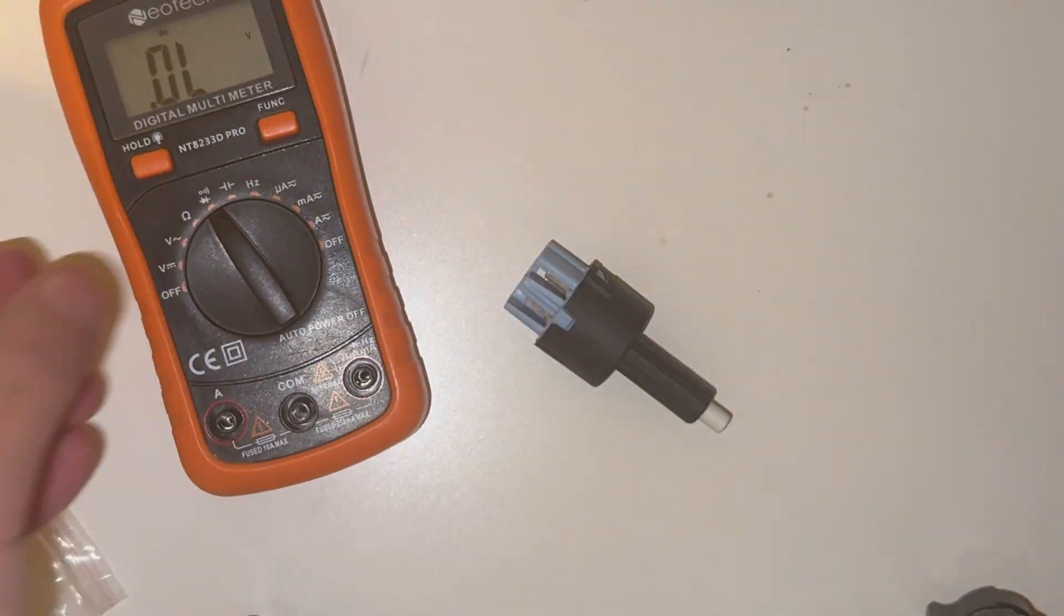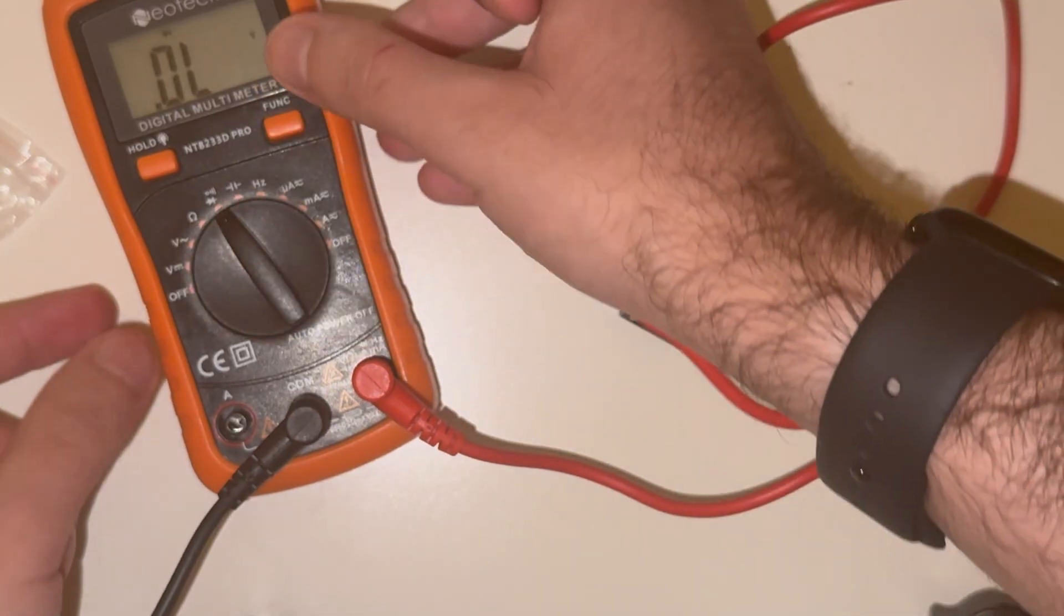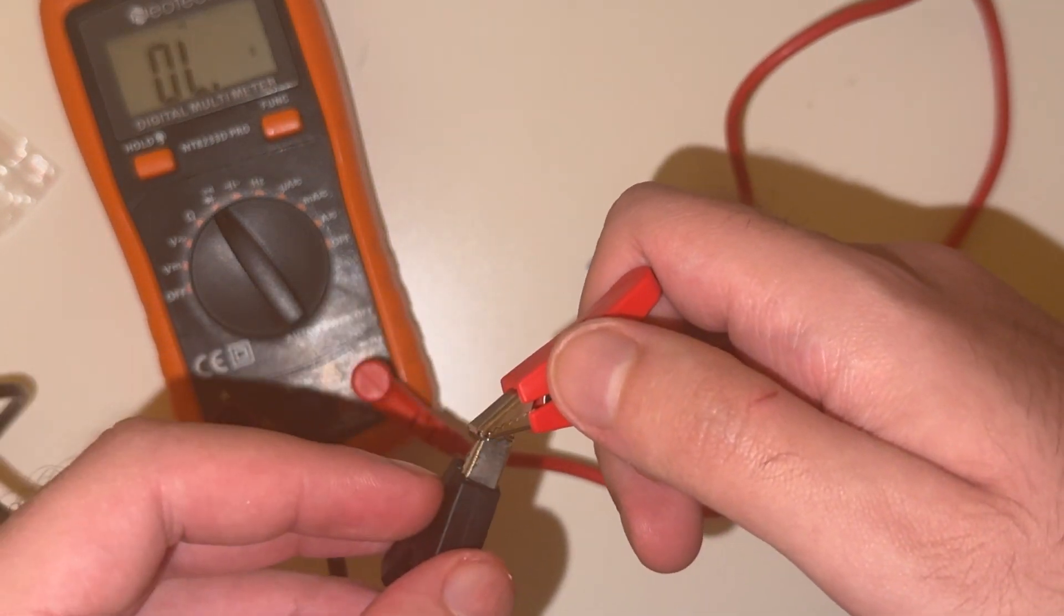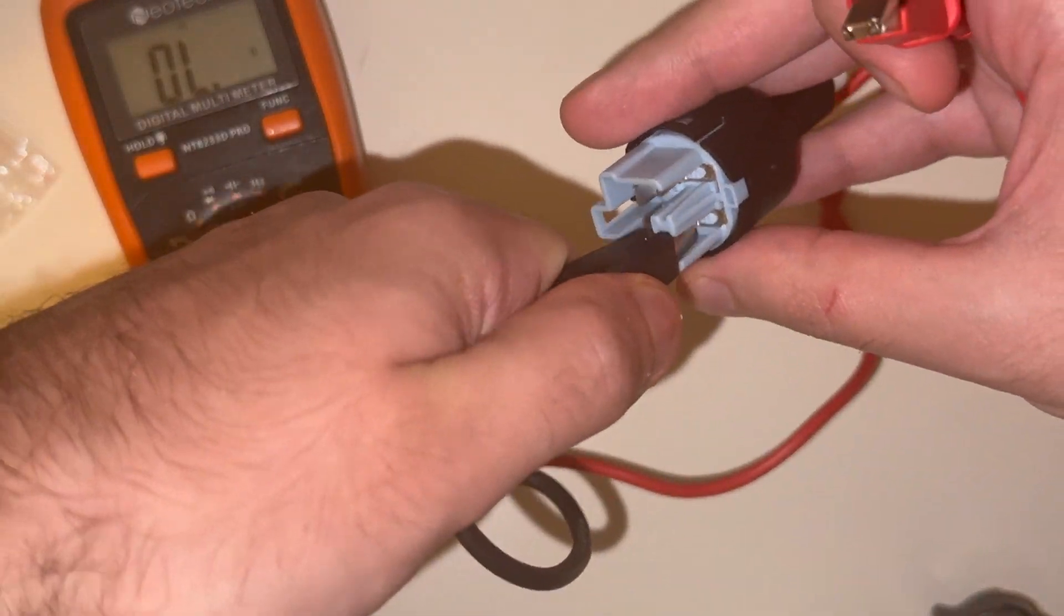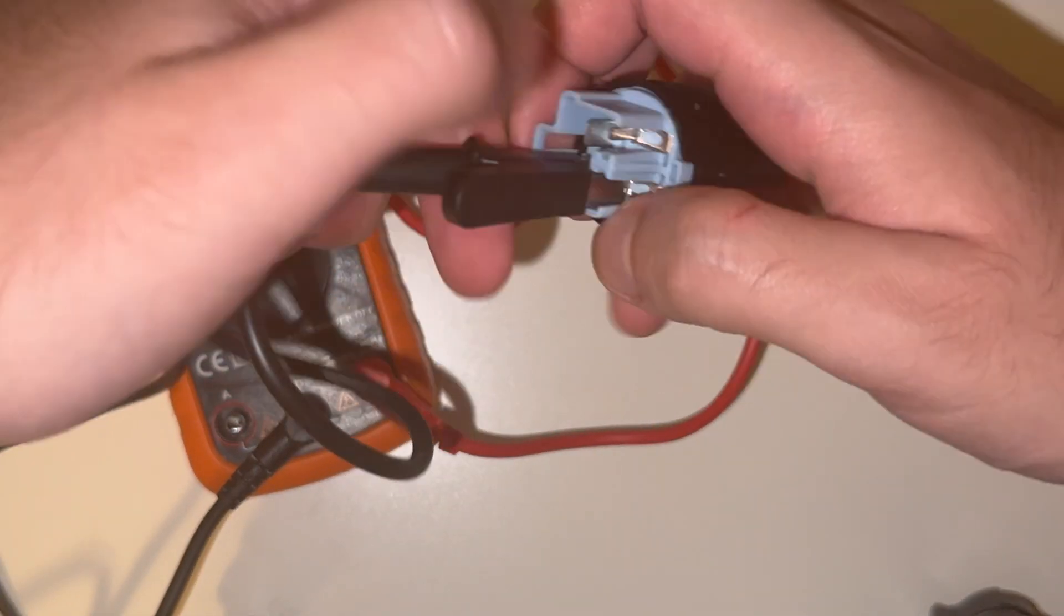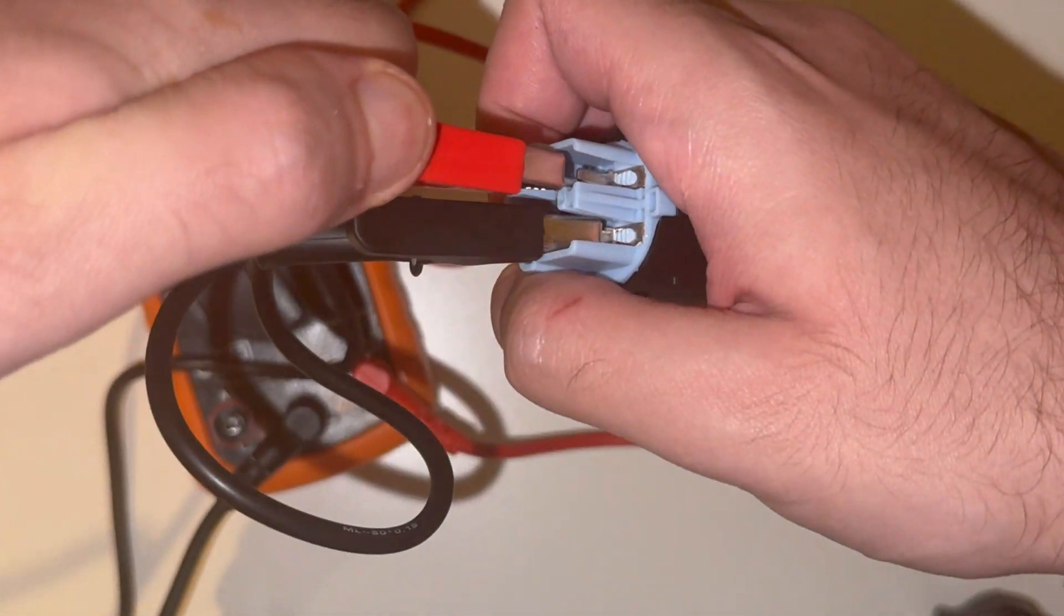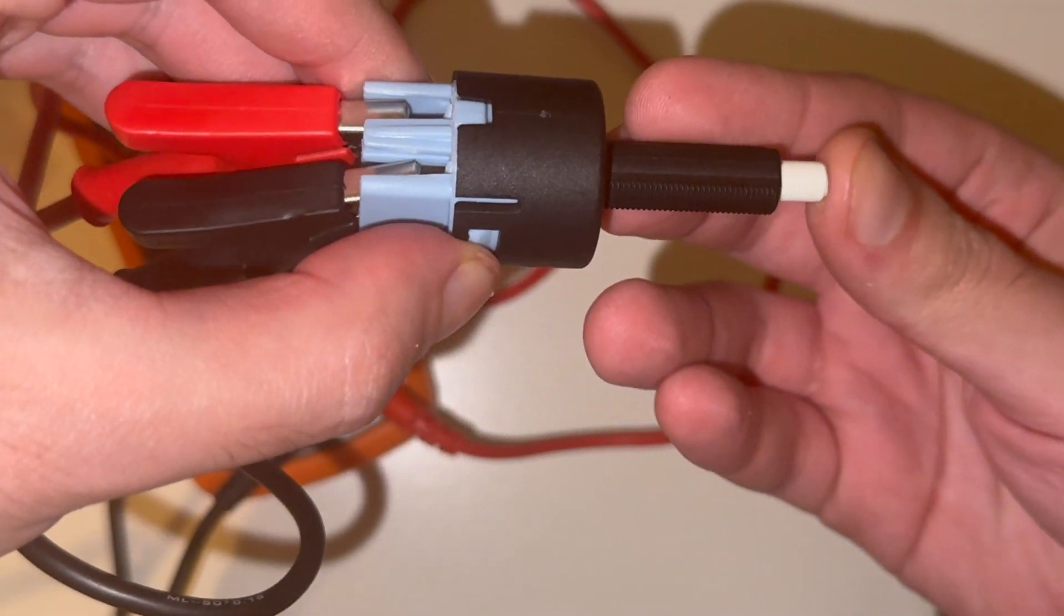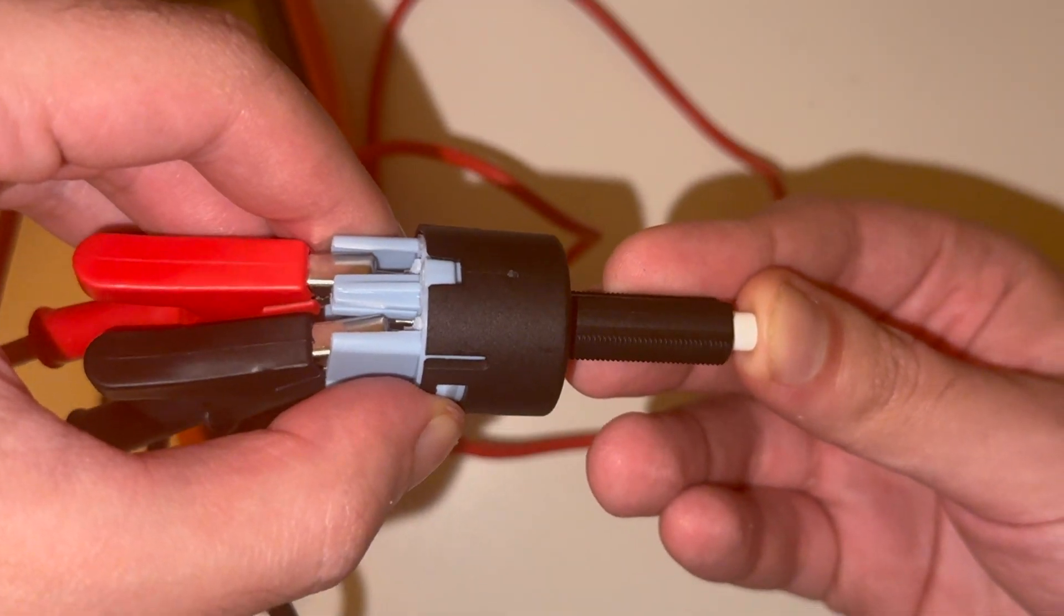Now we're going to grab our multimeter, set it to continuity test mode, and test the stoplight switch. So as you can see here, when there is very low resistance between the multimeter leads, the noise is made. We are going to start by testing pins 3 and 4, which are for the brake monitoring switch. Remember that the brake pedal, when not depressed, is normally pushing against this switch. So this switch, right now, when I depress it, is what it's like when the brake pedal is not depressed.